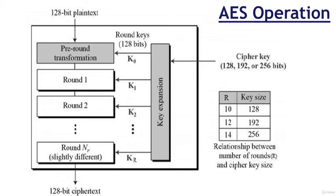AES is an iterative rather than Feistel cipher. It is based on a Substitution Permutation Network and comprises a series of linked operations, some of which involve replacing inputs by specific outputs, or substitutions, and others involve shuffling bits around, or permutations. Interestingly, AES performs all its computations on bytes rather than bits. Hence, AES treats the 128 bits of a plaintext block as 16 bytes, and these 16 bytes are arranged in 4 columns and 4 rows for processing as a matrix.